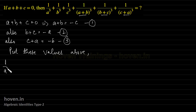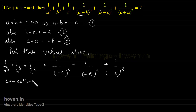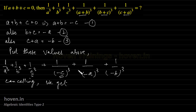Putting these values into the expression: 1 by a cube plus 1 by b cube plus 1 by c cube, where a plus b is replaced by minus c, b plus c by minus a, and so on. Then cancellations can be done: minus c and 1 by c cancel, 1 by a cube cancels, 1 by b cube cancels, and c cube cancels. So we are left with 0 as the answer.